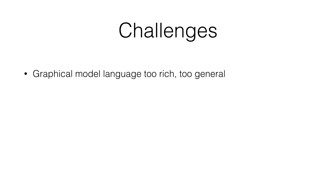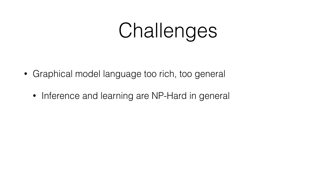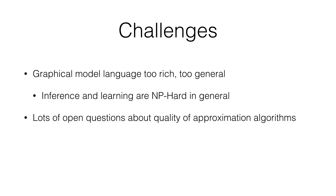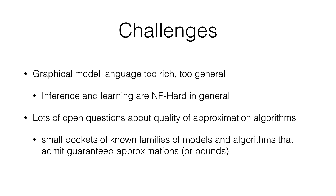Some of the challenges that come with all these promises are that the graphical model language is actually too rich — too general. A big sign of this is that inference and learning are NP-hard in general. It has been proven that if you can solve inference in a probabilistic graphical model in polynomial time, then P equals NP. That means we have to resort to approximation algorithms for general graph structures, and there are lots of open questions about the quality of those approximations.